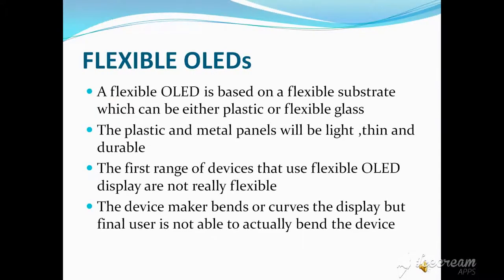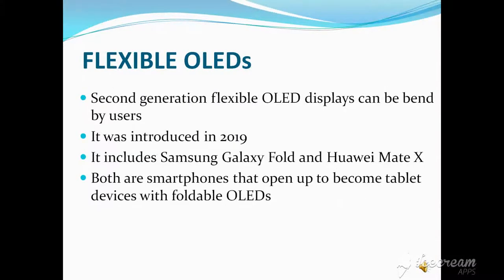A flexible OLED is based on a flexible substrate which can be either plastic, metal, or flexible glass. The plastic and metal panels will be light, thin, and very durable. The first range of devices using flexible OLED displays were not really flexible — the device maker bends or curves the display, but the final user cannot actually bend the device. The second generation of flexible OLED displays can be bent by the user; introduced in 2019, they include Samsung Galaxy Fold and Huawei Mate X, both smartphones that open up to become tablet devices with foldable OLEDs. Also in 2019, LG announced the world's first rollable OLED display. Flexible OLED displays are thinner, lighter, and more durable than glass-based displays.